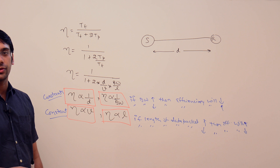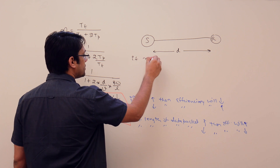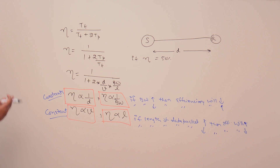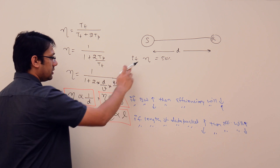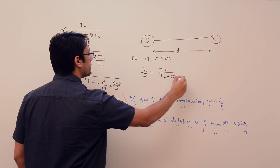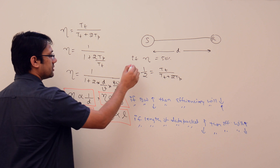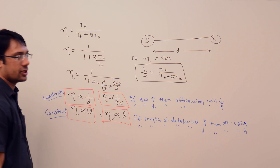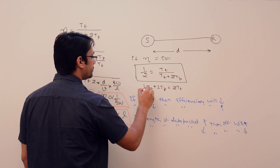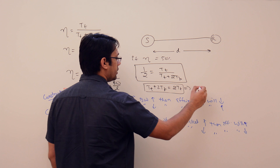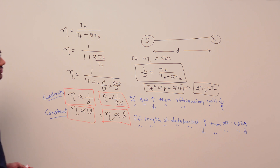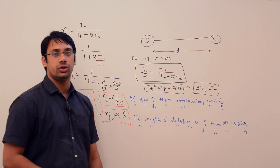Suppose we want the efficiency of the network to be 50%. Then 1/2 equals Tt upon Tt plus 2 into Tp. Doing cross multiplication: Tt plus 2·Tp equals 2·Tt, which simplifies to 2·Tp equals Tt. So to achieve 50% efficiency, the transmission time must equal 2 times the propagation time.